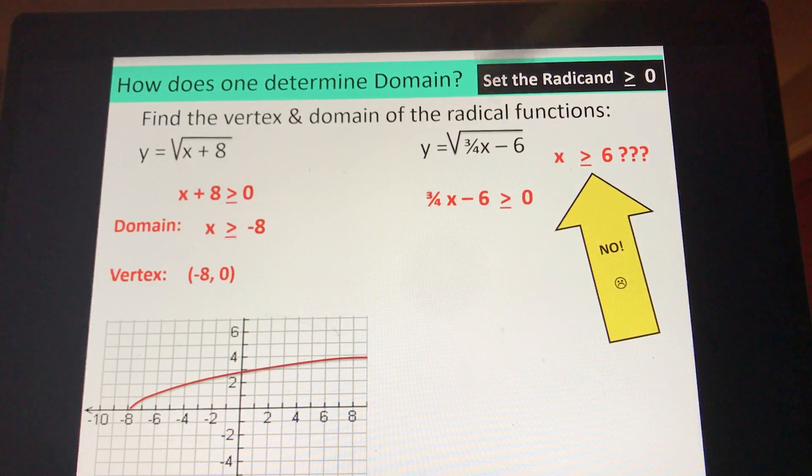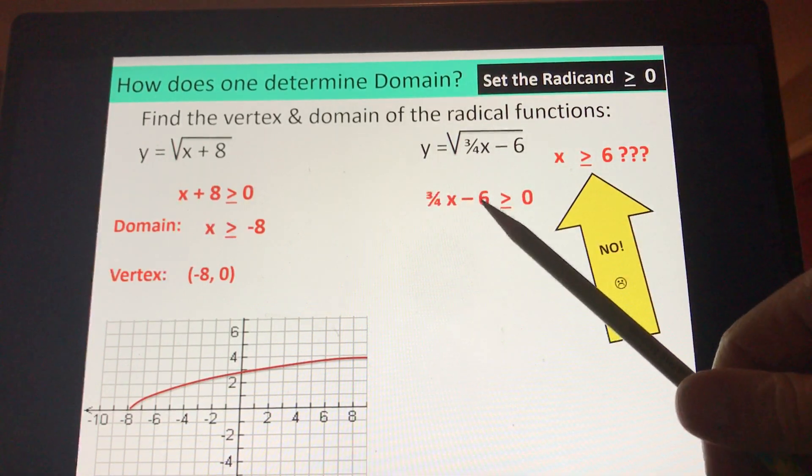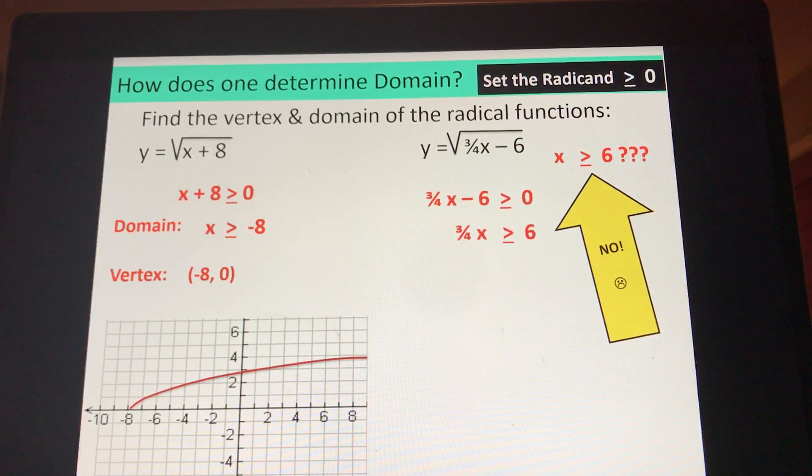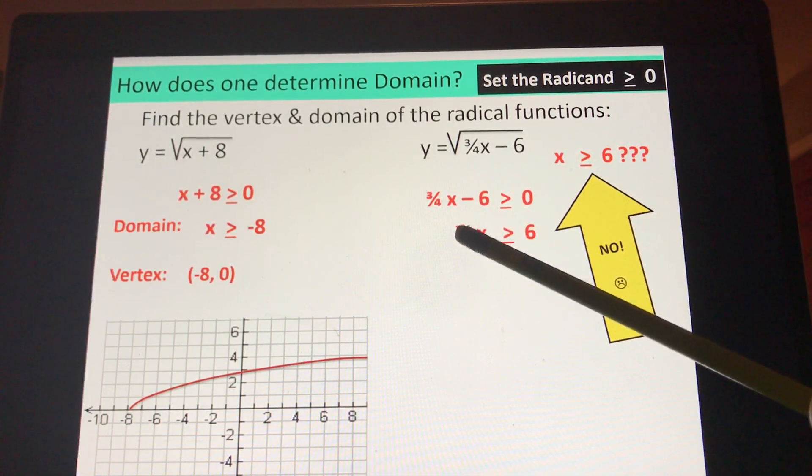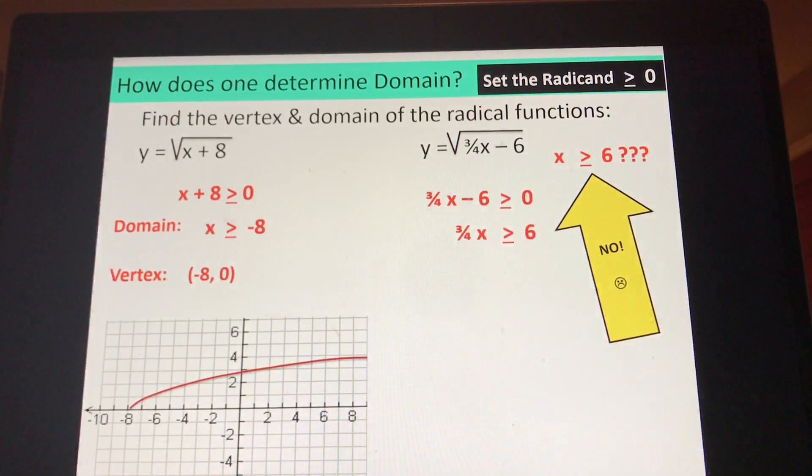So just like any other inequality you solved in math one, just like any equation you solved, you'd move the six over by adding six to both sides. You'd clear the fraction because you hate fractions, multiplying both sides by four. Four cancels out here. Four times 6 is 24.